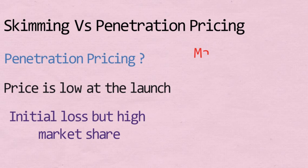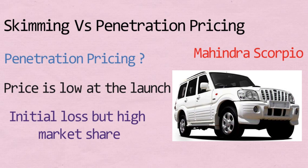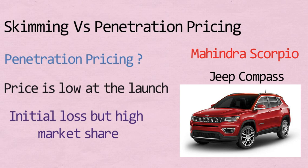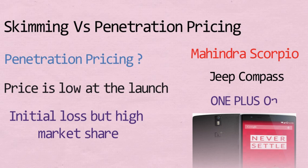The first example is Mahindra Scorpio. When launched in 2002, it was priced very aggressively compared to competitors, which allowed it to acquire huge market share in the SUV segment. The second example is the Jeep Compass, which was launched in India in 2017 using the same strategy of keeping prices low.